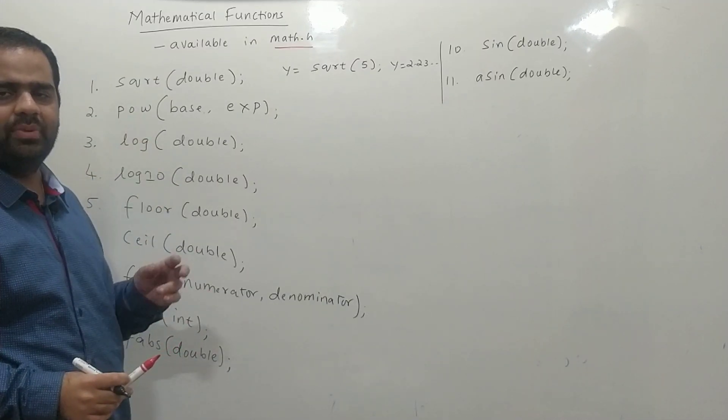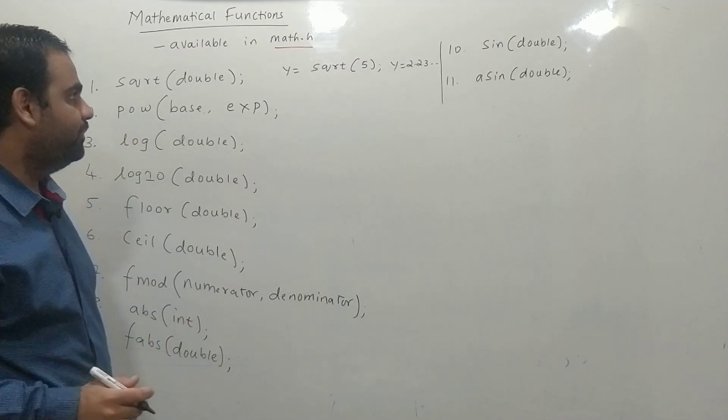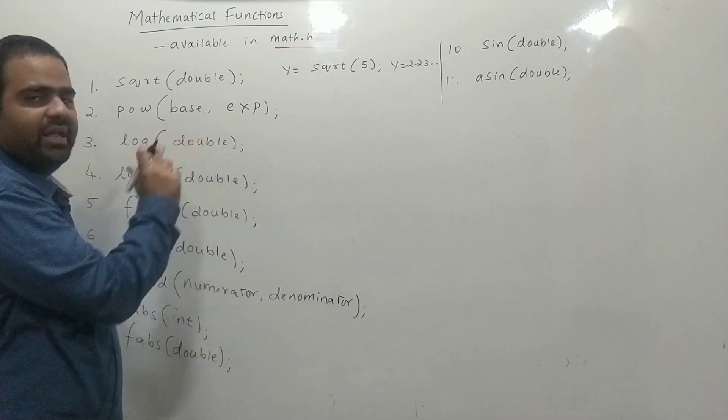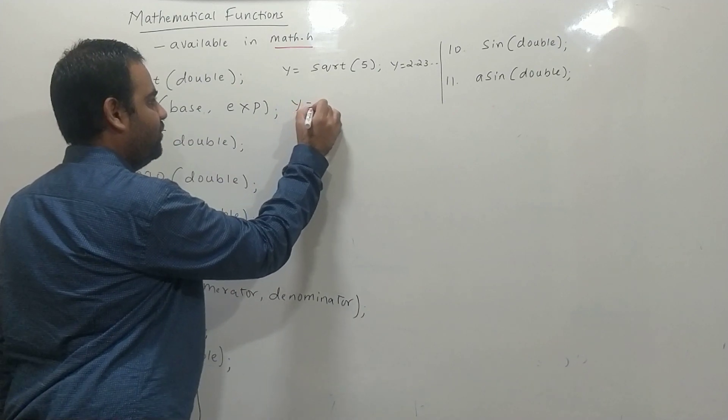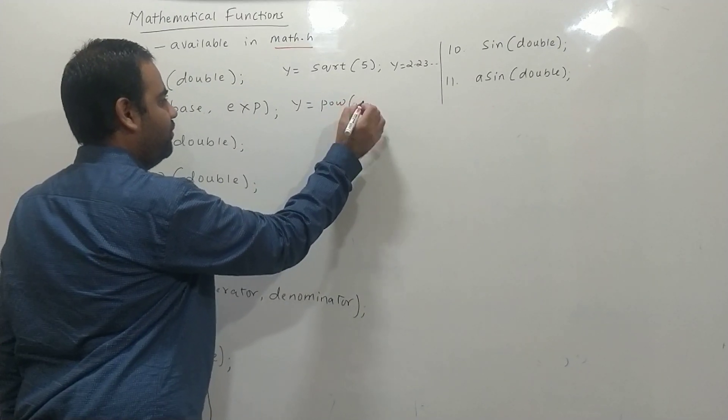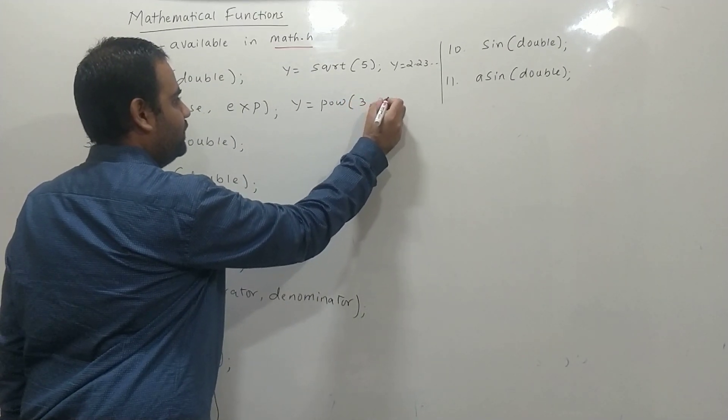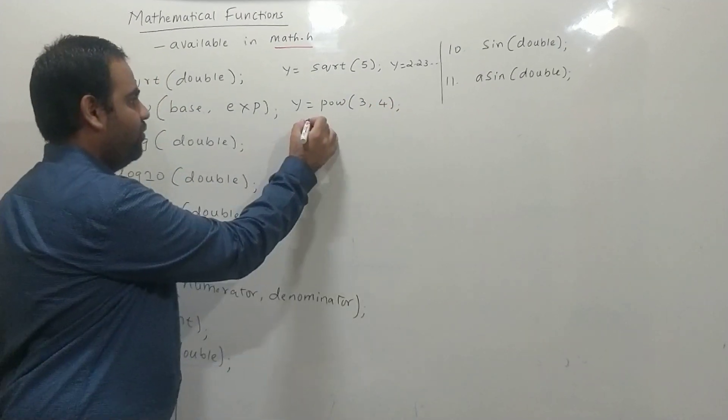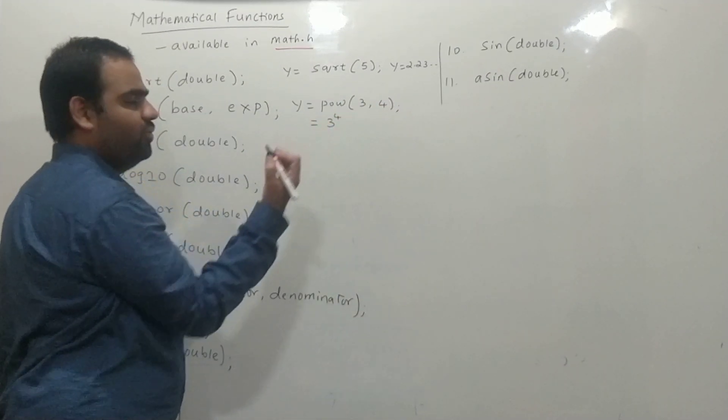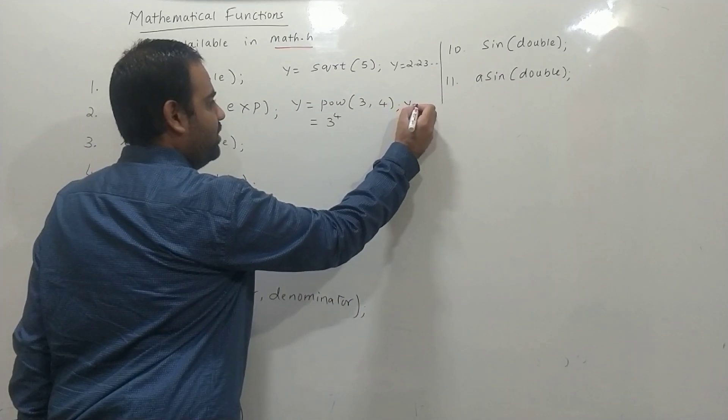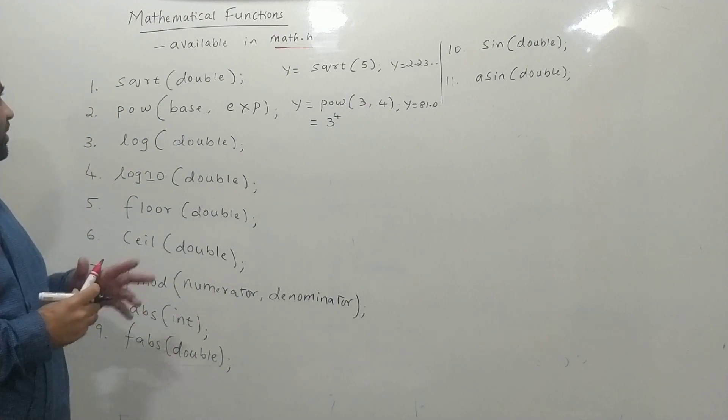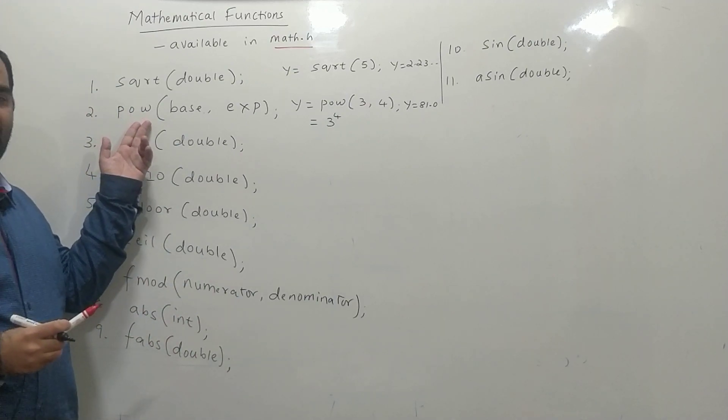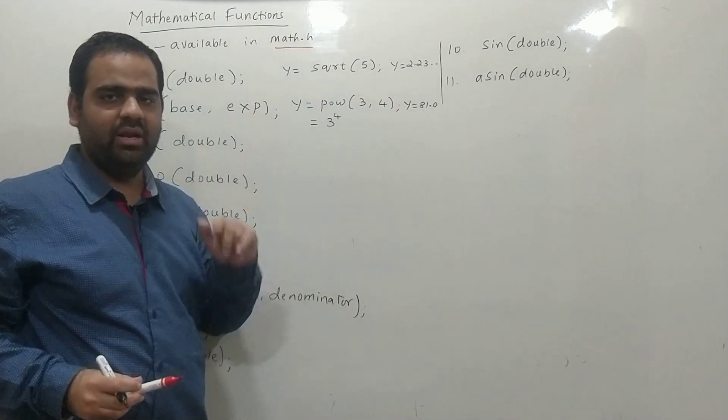Next, the function which is mostly used is power. It takes two things: base and exponent, and gives the answer. For example, if we write y equals pow of 3,4, it is the same as y equals 3 to the power 4. 3 to the power 4 is 81. Hence, the value of y will be 81.0. Remember, the value given by power is in double data type.